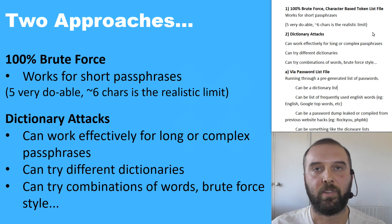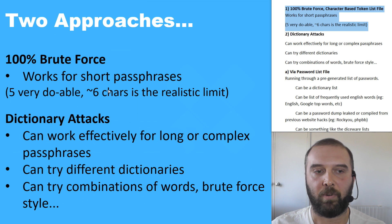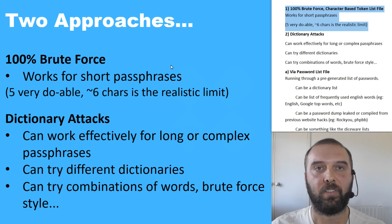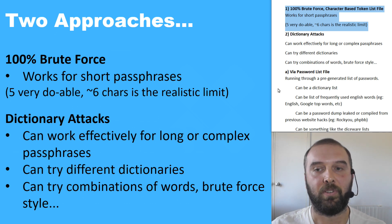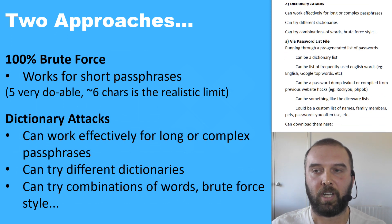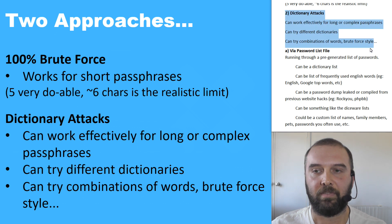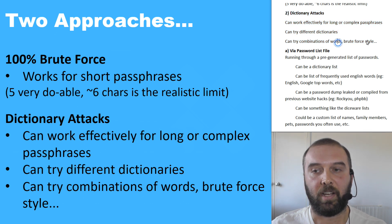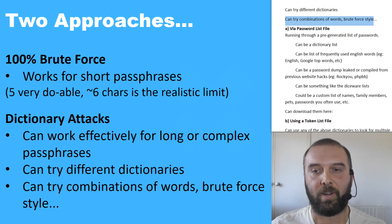Once you've set up your environment, there are two general approaches. The first is a 100% brute-force approach — using a token file full of individual letters combined in different combinations. That works okay for shorter passwords, such as plausible deniability-style passphrases. The second approach is dictionary attacks, which can work effectively for long, complex passphrases using different types of word lists, or by trying different combinations of words in a brute-force style.